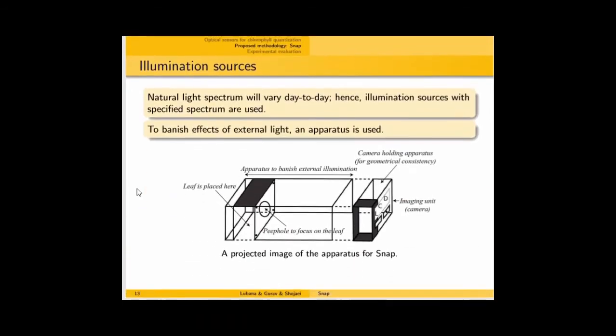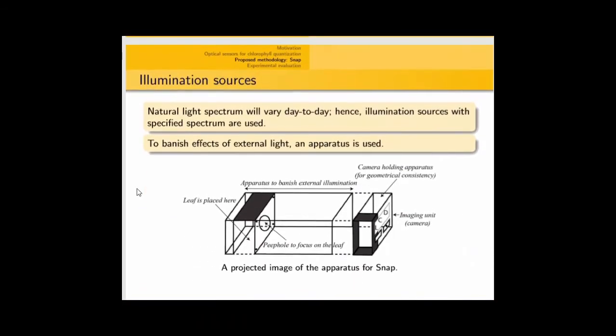So, this brings us to an important aspect of SNAP, the illumination sources. We use specific illumination sources which are necessitated by the spectral parameter. Most of the previous work were using sunlight directly, and that is a huge problem for sunlight because it can vary in terms of its intensity composition from day to day and time to time.